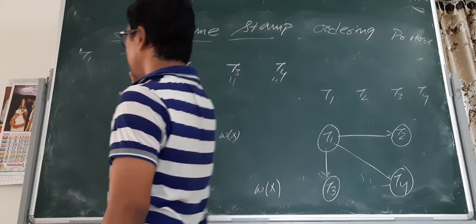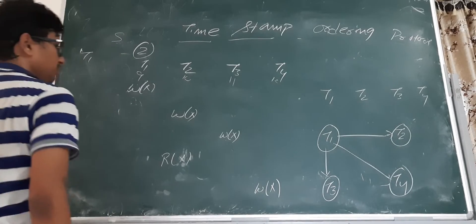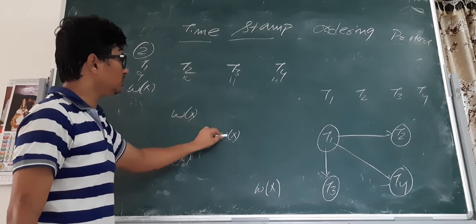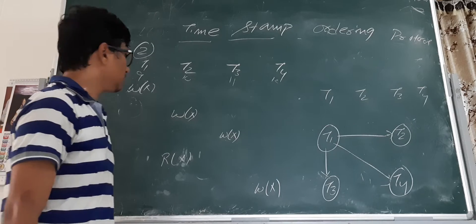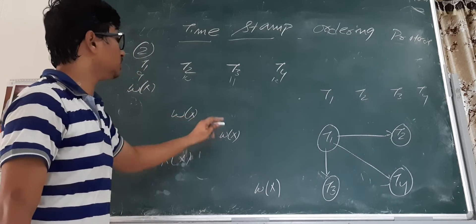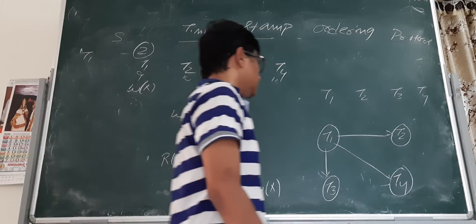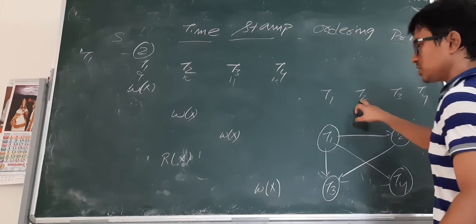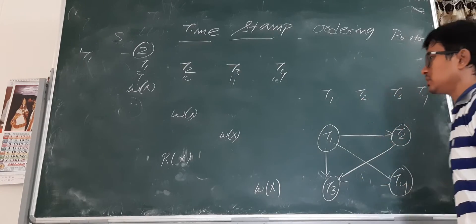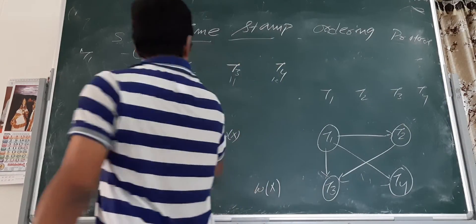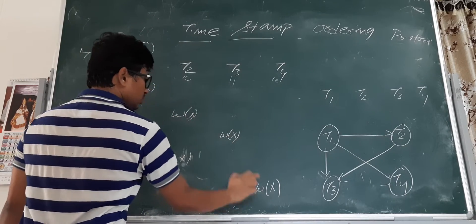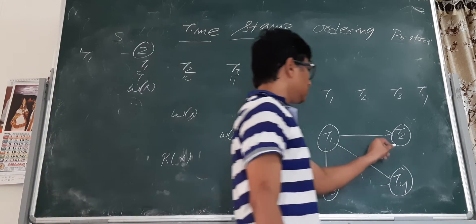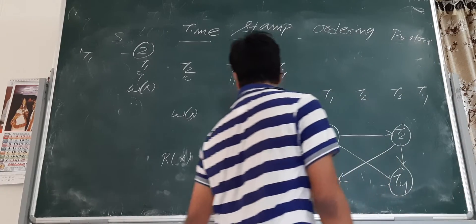So it is saying transaction one should be executed first — till now it is okay. Then transaction two to transaction three: it is saying that after transaction two you should execute transaction three, which is also fine because we should execute transaction two then transaction three. Now it is saying transaction two to transaction four — transaction four should be executed after transaction two.